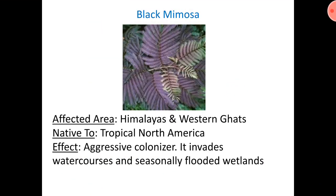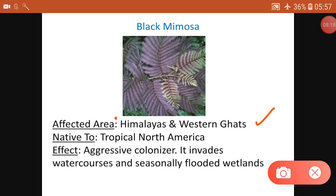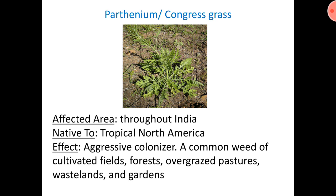Black Mimosa is affecting the Western Ghats as well as the Himalayas — these two are central to India's biodiversity. It is native to North America and is an aggressive colonizer. It affects water courses and seasonally flooded wetlands.